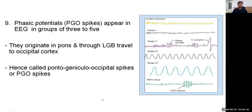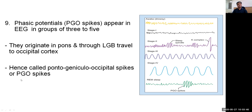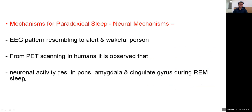Next is phasic potential, also called PGO spikes, that is pontogeniculo-occipital spikes. These phasic potentials appear in EEG in groups of 3 to 5. They originate in the pons and through the lateral geniculate body are driven to the occipital cortex, hence the name pontogeniculo-occipital spike or PGO spike.